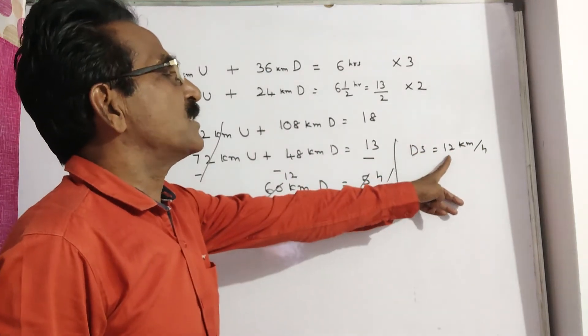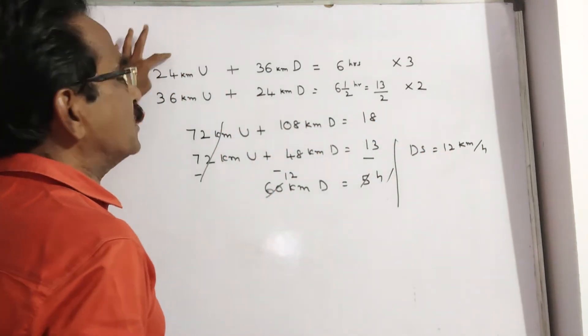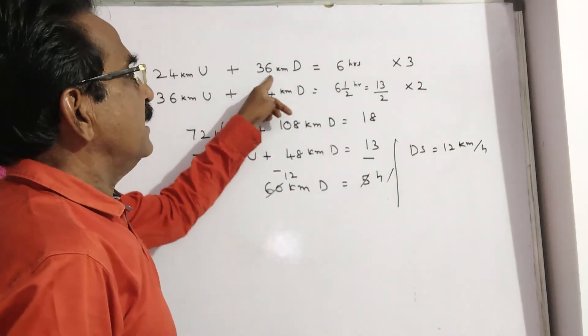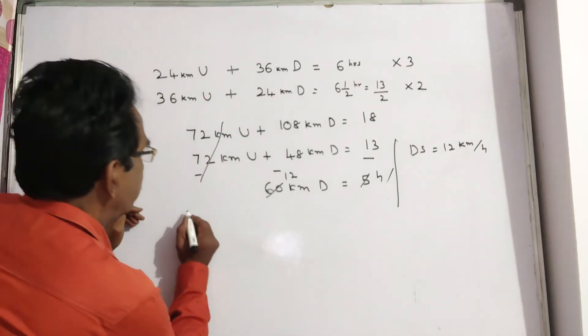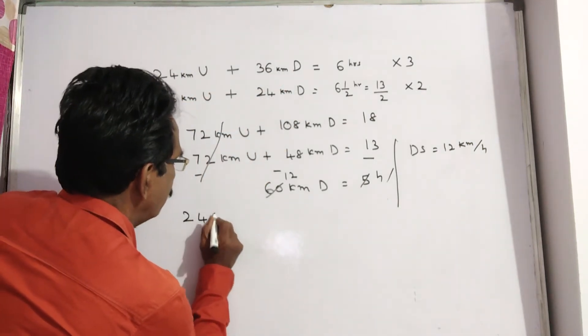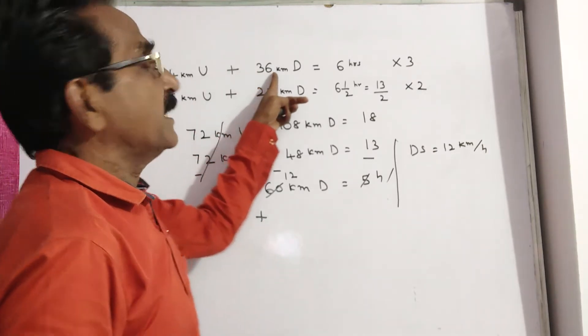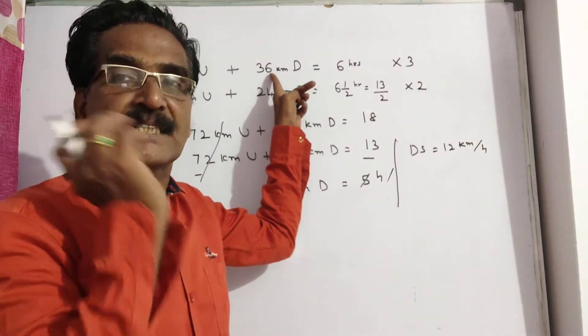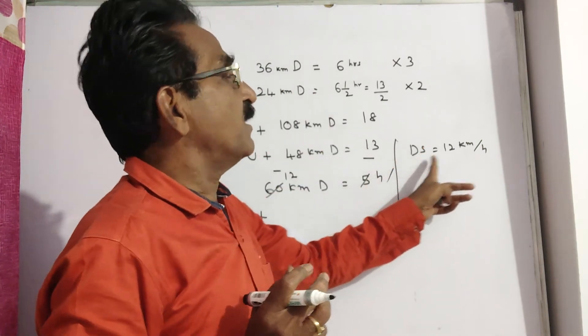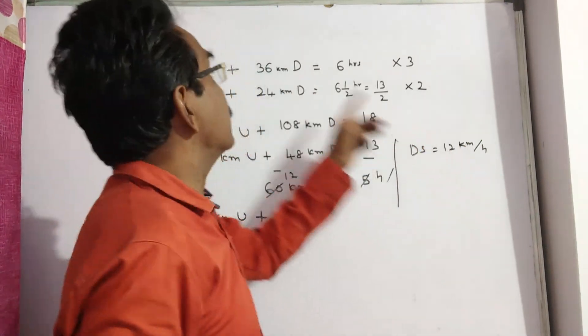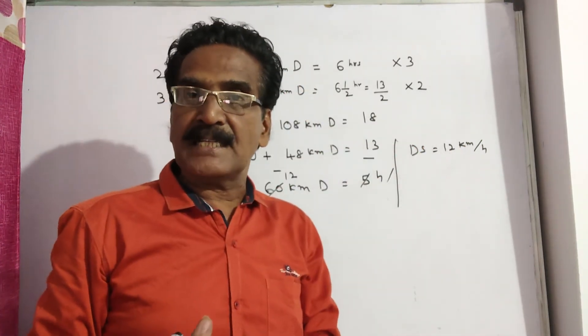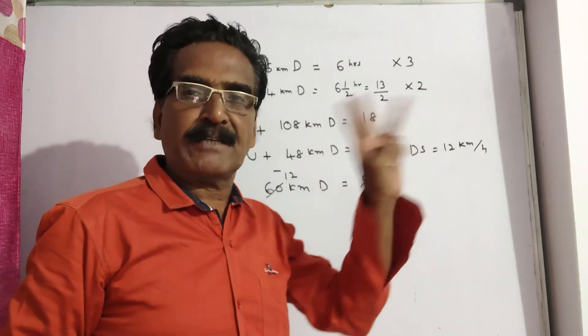Now let us substitute this downstream velocity in any of these 2 equations. 24 kilometers upstream plus 36 kilometers downstream, how much time will it take? Downstream velocity is 12 kmph. So to travel 36 kilometers, it takes 3 hours, 36 by 12.